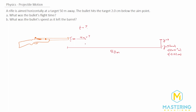For Part A, to find the flight time, we'll use the y component of the bullet's velocity. The equation is: y final equals y initial plus initial velocity in the y direction times time plus one-half the acceleration times time squared. The initial y is 0, so that goes to 0. The initial velocity in the y direction is also 0 — don't confuse this with the initial velocity in the x direction; they are completely different components.